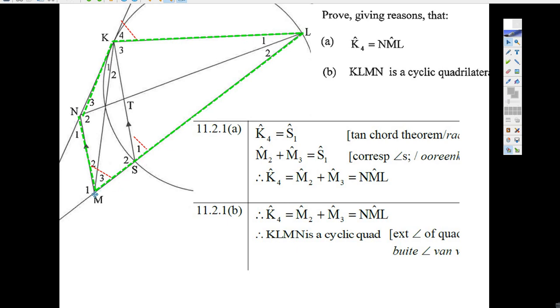I'm supposed to prove that's a cyclic quad. But if I continue on this line, K4 is the exterior angle, and M2 plus M3, NML, is the interior angle of this cyclic quad. So, this is a cyclic quad.